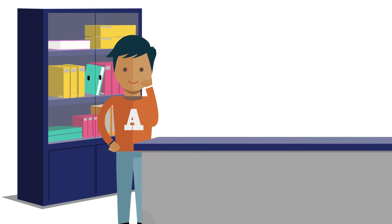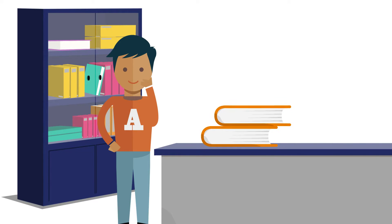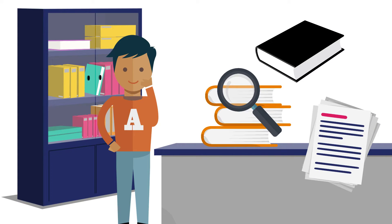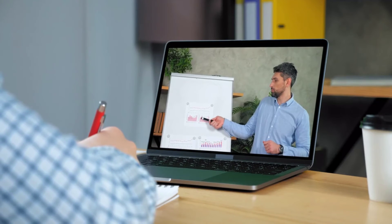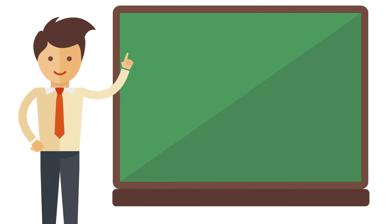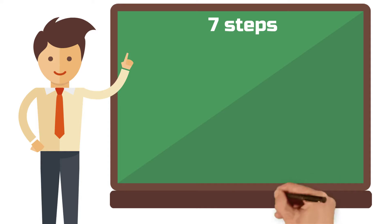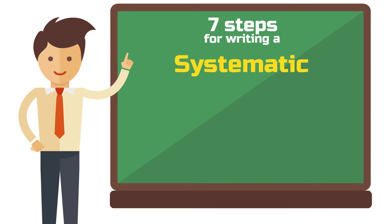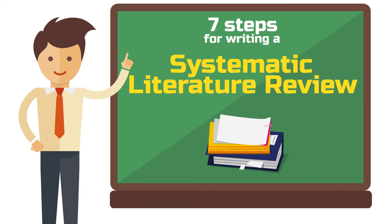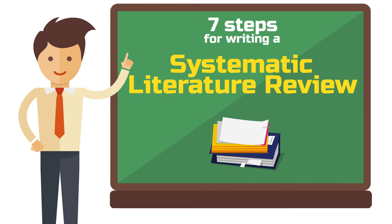If you are up for the challenge of writing a systematic literature review, for example as a project or in more detail as a thesis or dissertation, then you are in the right place. The art of writing such a review must be learned and depends heavily on how well you have acquired the tools of this method beforehand. To ensure the success of your endeavor, I provide you with 7 steps on how to write a systematic literature review in this video. With these 7 steps you will become familiar with this particular method and will be able to structure your methodological approach from beginning to end.